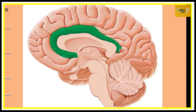The cingulate gyrus has two parts: the anterior cingulate gyrus and the posterior cingulate gyrus. It is the subject of many cognitive and neurocognitive studies because damage to the cingulate gyrus can affect our ability to respond to startling stimuli, resulting in abnormal behavior such as aggression and shyness, or a decrease in emotional expression. The cingulate gyrus has also been implicated in Alzheimer's disease, anxiety disorder, addiction, depression, bipolar disorder, and schizophrenia.